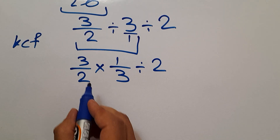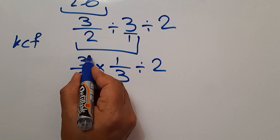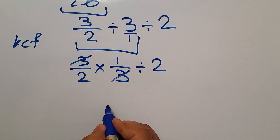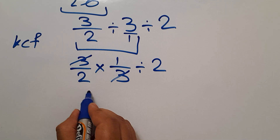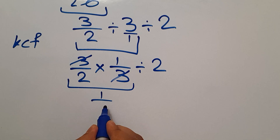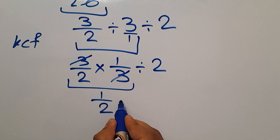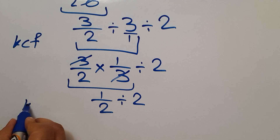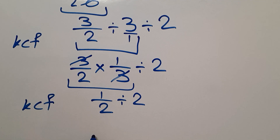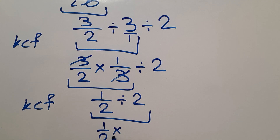Here we can easily cancel the 3 and this 3, so we have 1 over 2. Then 1 over 2 divided by 2. Again according to the KCF rule, this is equal to 1 over 2 times 1 over 2.